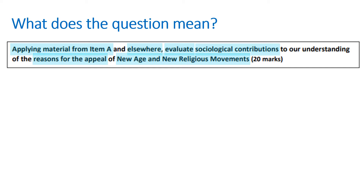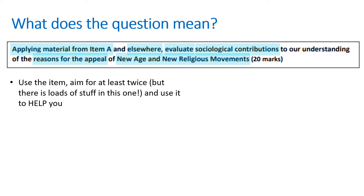We're going to start by thinking about what the question is asking of us. On page 17 in your packs, you've got a space to make some notes. I'd suggest you listen first, and then at the end you can pause to write down anything you want. So I've highlighted this question. The first part I've highlighted is 'applying material from Item A' — we want to try and use the item at least twice, as a good rule to follow. But it doesn't have to be in every paragraph; you just need to refer to the item somewhere in the essay.